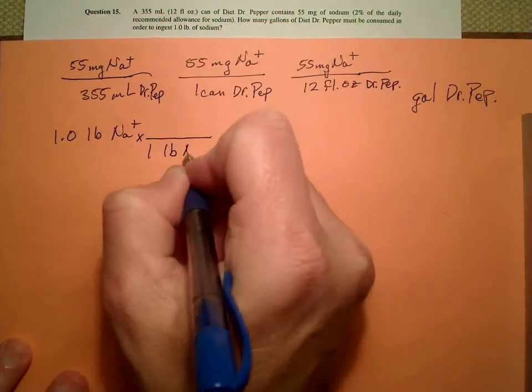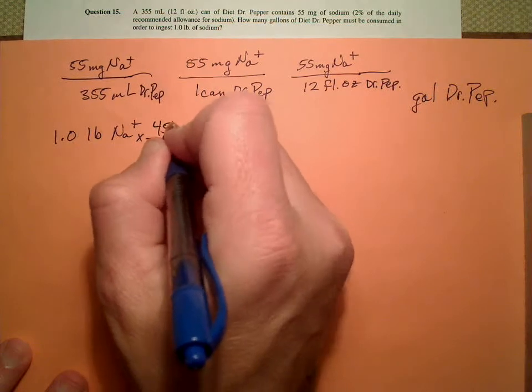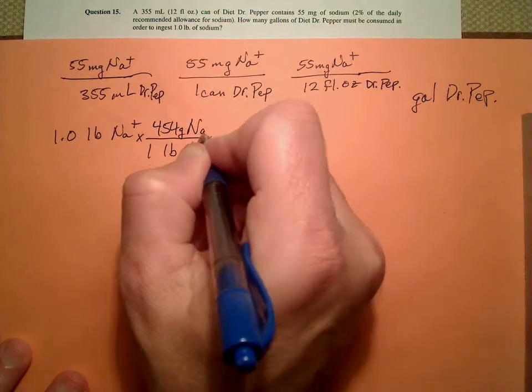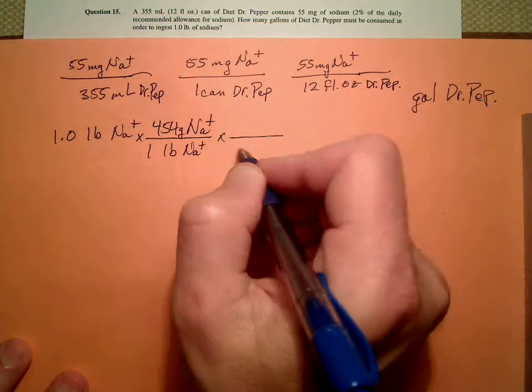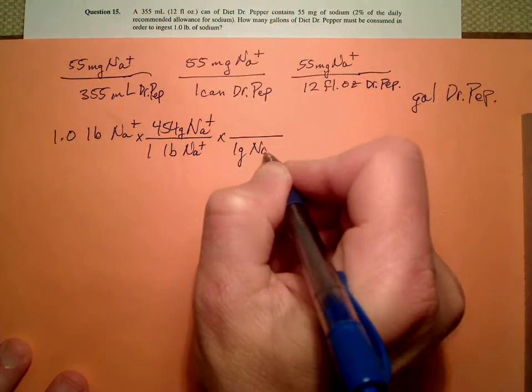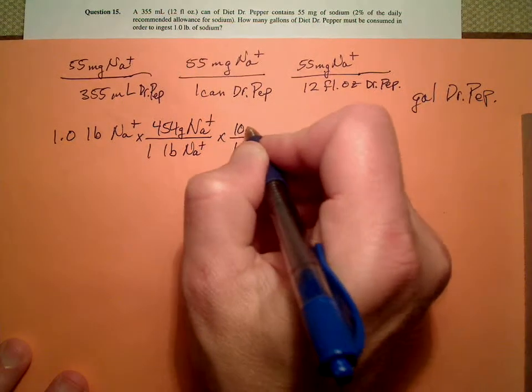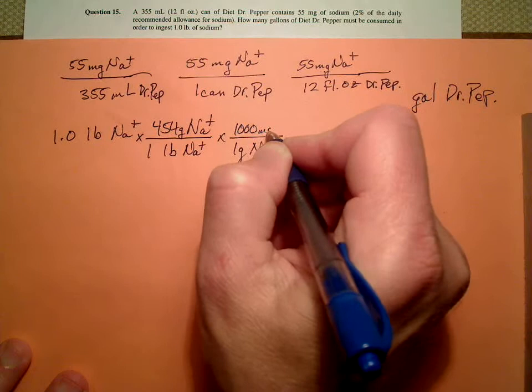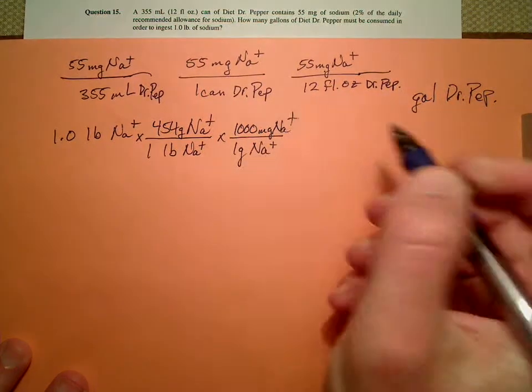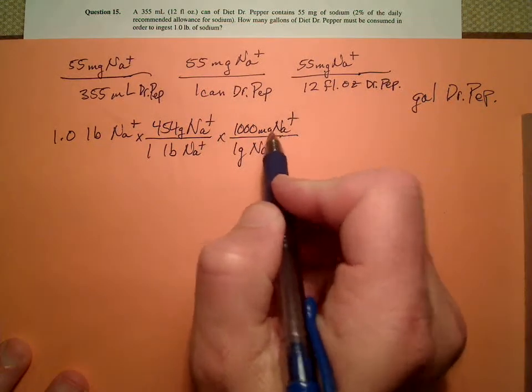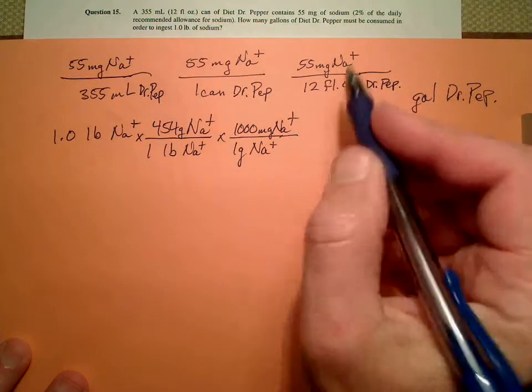One pound of sodium, 454 grams of sodium. And I know that in one gram there are 1,000 milligrams. Now we're in business. So up to this point I was just getting this in milligrams, so now I can use this conversion.